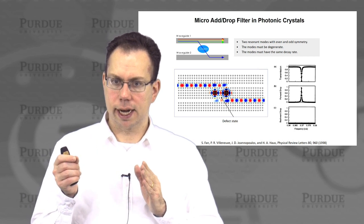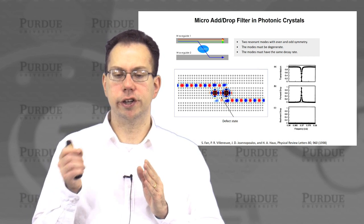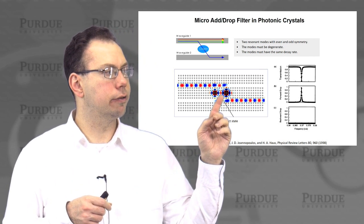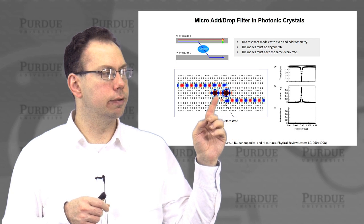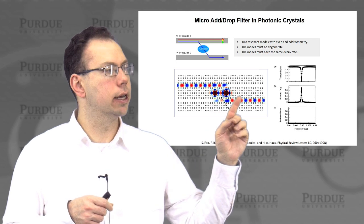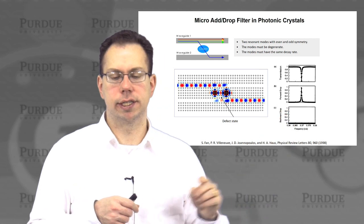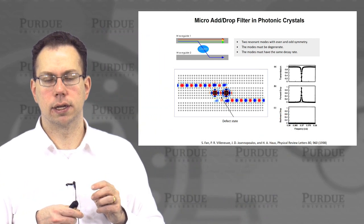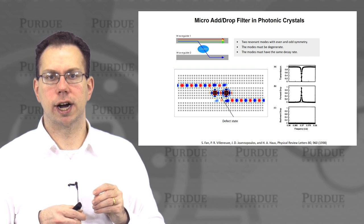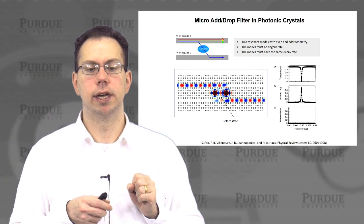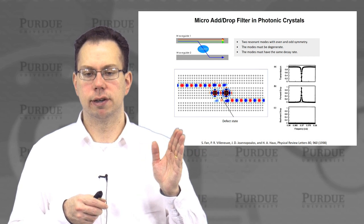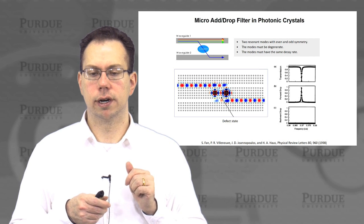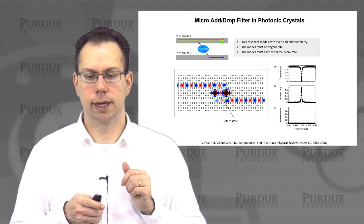You can also add tunability — allowing the refractive index of the two resonators to change slightly — which shifts the wavelength at which transmission is minimized and the drop into the second port is maximized. This can be shifted within multiple wavelength ranges, which is very helpful for wavelength division multiplexing applications.